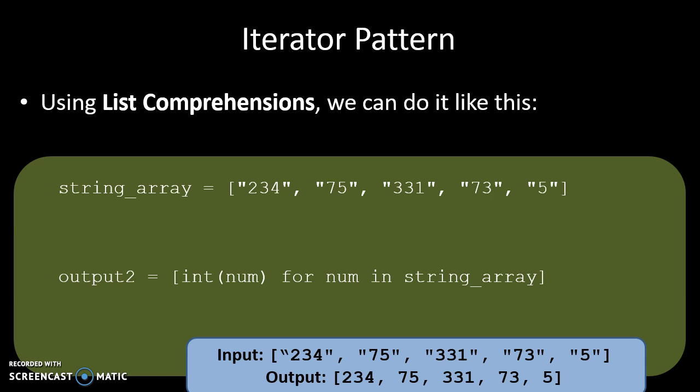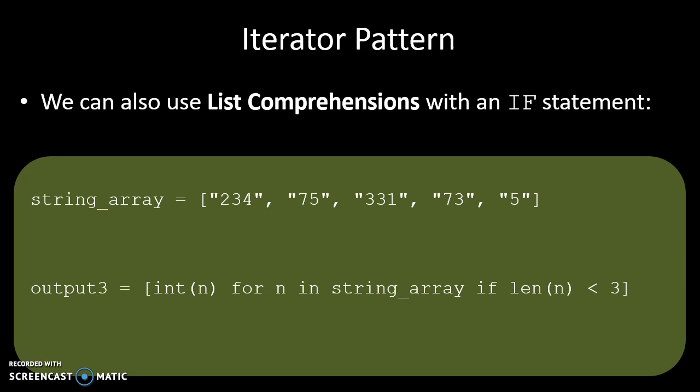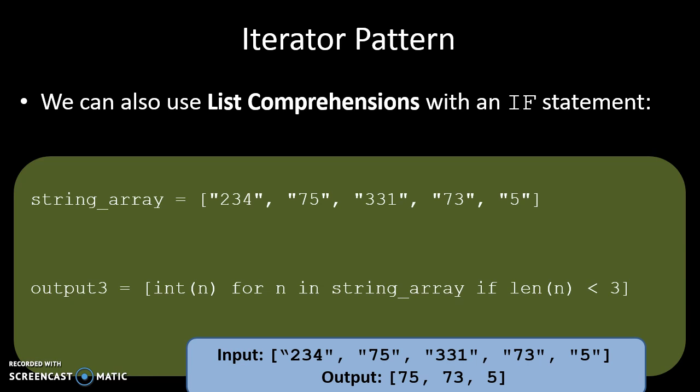We can also use an if statement in a comprehension to only convert certain elements. For example, we can say: pick any strings that are less than three characters in length and convert them into integers. The output only contains the values whose string length is less than three digits. So we can select which changes are made to a list on the basis of a condition — simply by stating the change, having a for loop, and then an if with the condition.